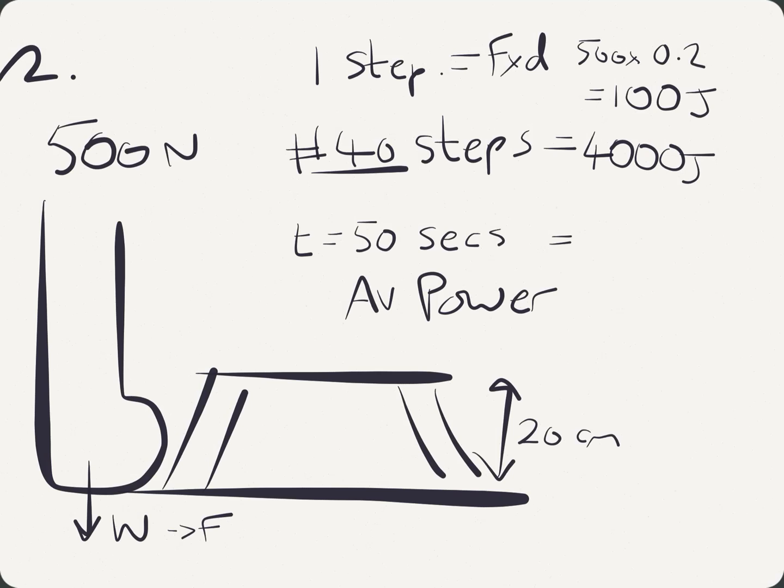We did it in 50 seconds, so we want total work done, 4,000 joules, and we want to divide that by 50. And again, don't go for a calculator. Rub those out. How many fives in 100? 20. So, how many fives in 400? 80. 80 joules every second.